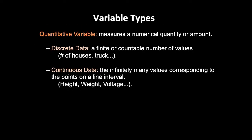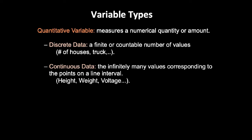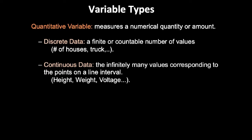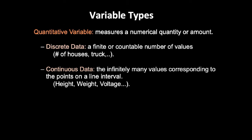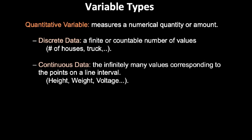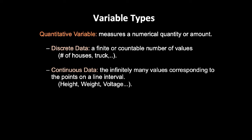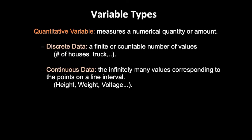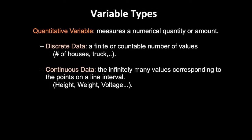A quantitative variable measures a numerical quantity or amount. Discrete data has a finite or countable number of values. Examples include number of houses, number of friends, and number of trucks. Here we use only whole numbers. For example, how many best friends do you have? You can say 6, but you would never say 1.2 or 2.3 friends — we don't use decimals, only whole numbers. That type of variable is called a discrete variable.